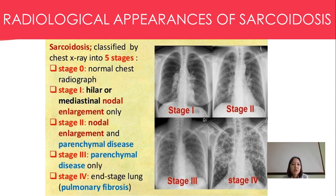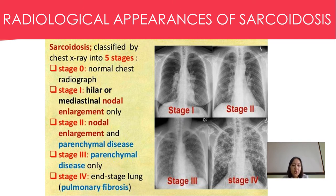The radiological appearance of sarcoidosis has four stages. Stage 0: normal chest radiograph. Stage 1: hilar or mediastinal lymph node enlargement. Stage 2: nodal enlargement with parenchymal disease. Stage 3: parenchymal disease only. Stage 4: pulmonary fibrosis along with signs of all previous three stages.